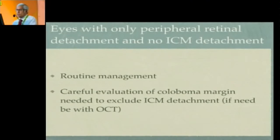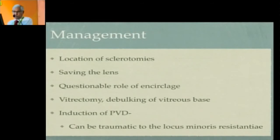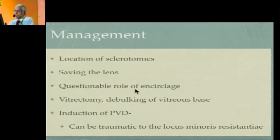Eyes with only peripheral detachment and no ICM detachment are managed routinely, ignoring the coloboma. When planning a vitrectomy, the location of sclerotomies will vary depending on the degree of microphthalmia. You may have to sacrifice the lens in a few cases, even if it is clear, because of the eyeball being very small and the lens being correspondingly large. Encirclage has a questionable role, especially in an eye with a large coloboma extending through about four clock hours — it does very little, as there is no retina in the inferior part and the retina needing support is all superiorly located.